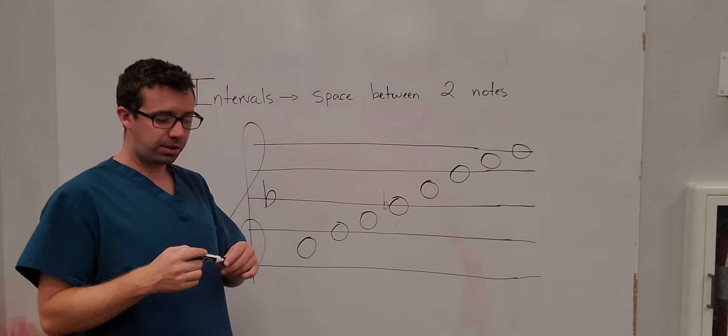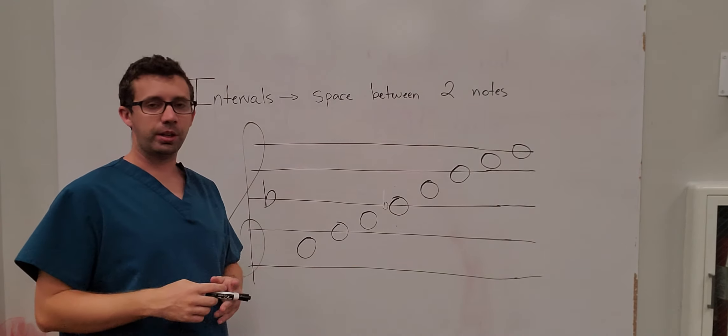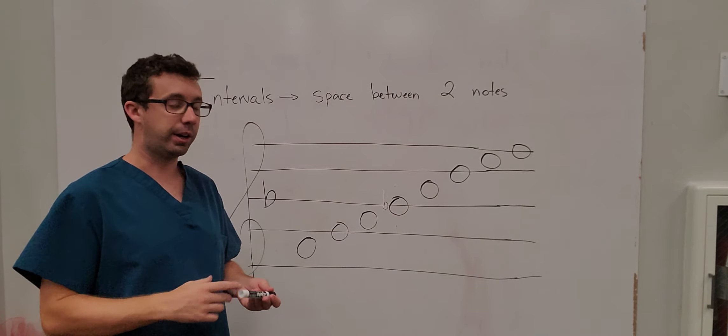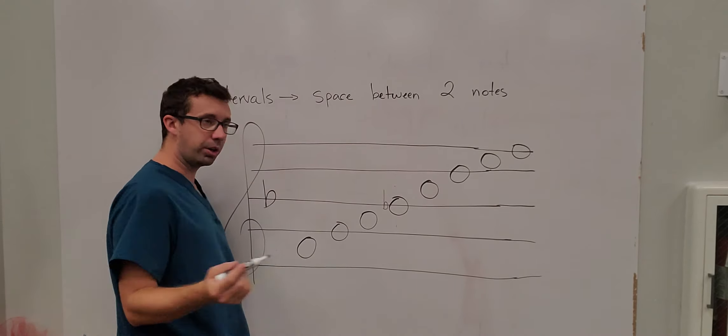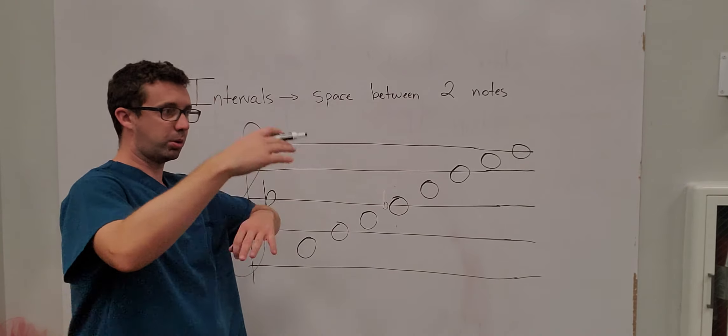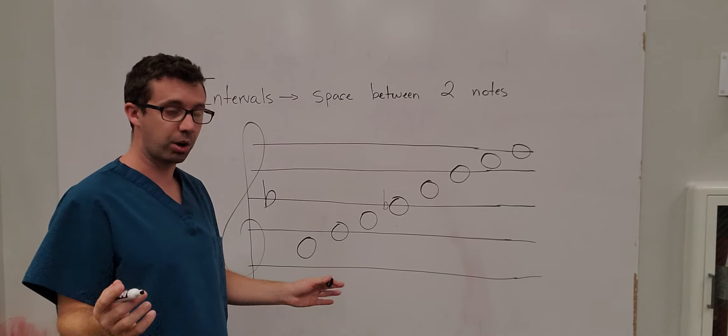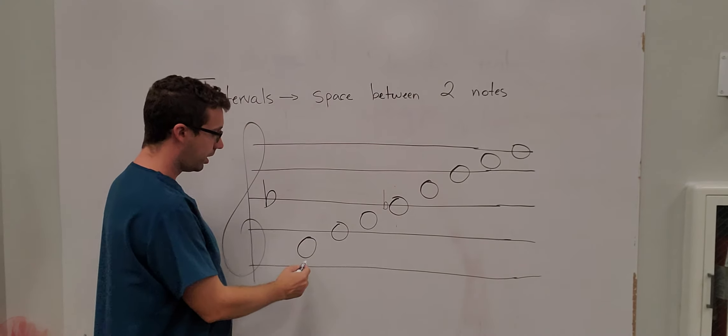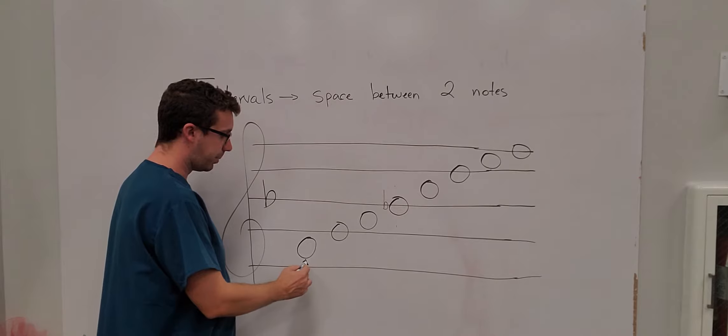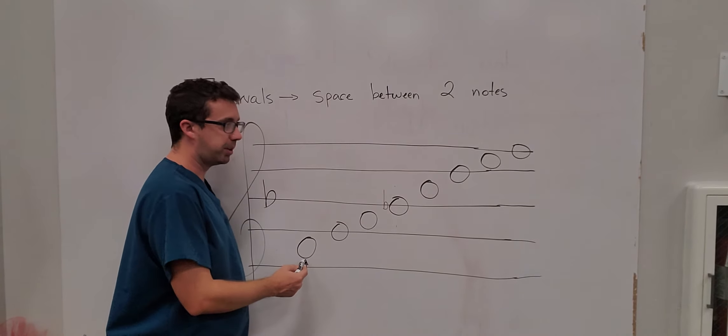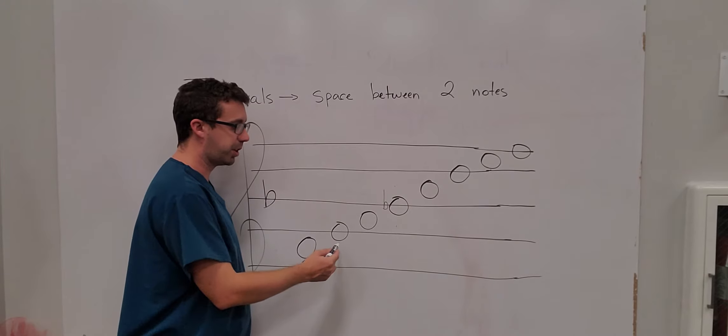And so as a review for key signatures, the key of F has one flat and that's B flat over here. So using a scale, the intervals in the major scale are the only intervals that I would like you to know for now. And depending on what note, what notes, depending on which note you go to, that's what interval it is. You're always going to start on the bottom note. So we're always going to start from whatever the bottom note is.